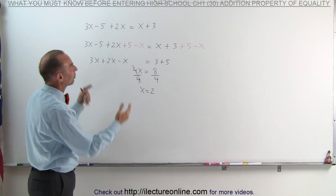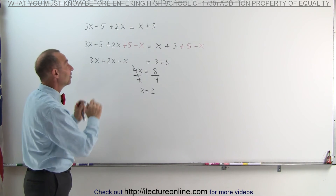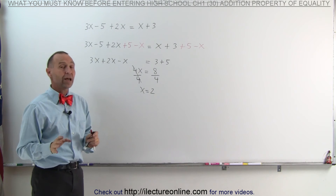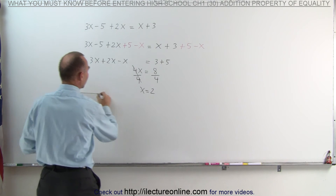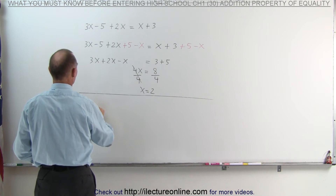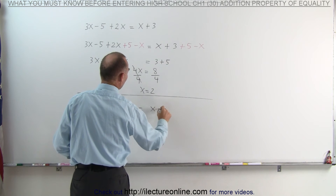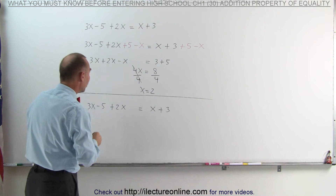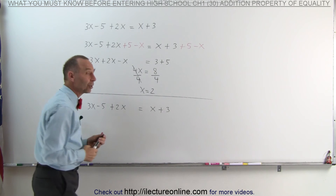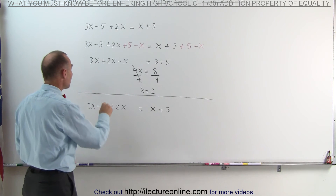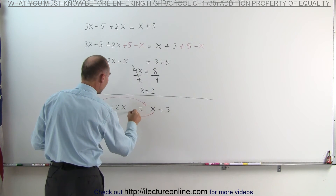Now it also turns out there's actually an easier way to simplify things. Let me go ahead and write the equation again: 3X minus 5 plus 2X is equal to X plus 3. What I want to do is get the negative 5 gone and get the X gone on the right side of the equation. In essence, what I could do is simply move the negative 5 to the other side of the equation, and move the X to this side of the equation.